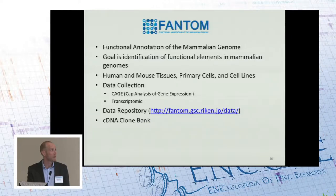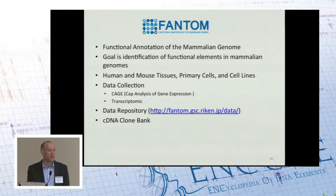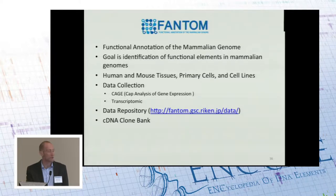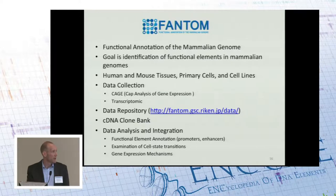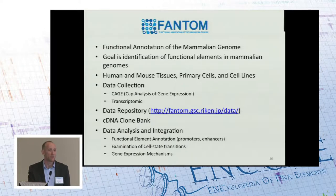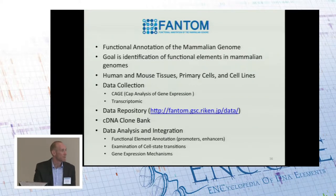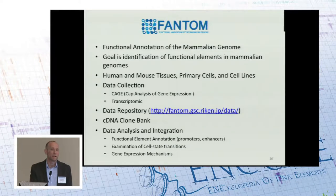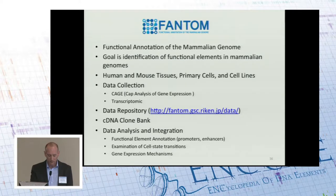All FANTOM data is available at a public repository. Another resource that FANTOM provides is a cDNA clone bank, so they have clones of many of the full-length cDNAs that they've identified over the course of their project. There is a coordinated data analysis and integration effort. This focuses to a large extent on functional element annotation, using their CAGE data to identify both promoters looking at mRNAs as well as enhancers using their data to map enhancer RNAs. They've also taken a foray into examining different cell states and fates, and have done some work looking specifically at mechanisms of gene expression.